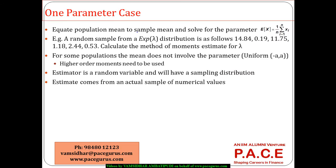We look at two scenarios: one being a one-parameter case, and the second one being a two-parameter or multiple-parameter case. In a one-parameter situation, we equate the population mean to the sample mean and then solve for the parameter. For example, a random sample is taken from an exponential distribution with lambda as the parameter.